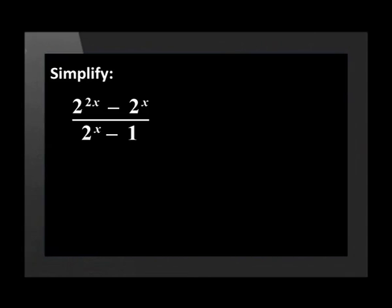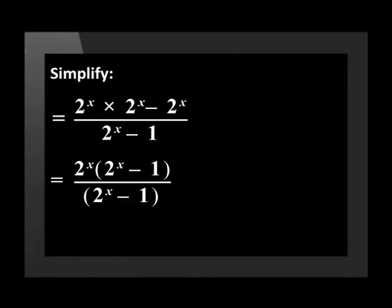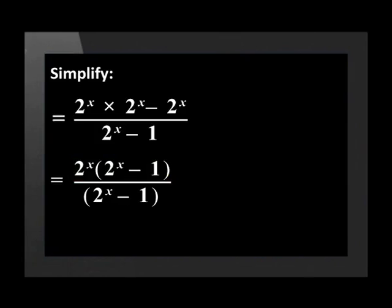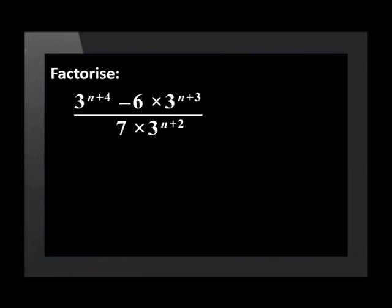Notice that the numerator has exactly the same terms as the previous example, so let's factorize it by taking out a highest common factor of 2 to the power of x. The numerator becomes 2^x multiplied by the bracket 2^x minus 1. The numerator and denominator now share a common factor of 2^x minus 1. Putting brackets around the denominator and cancelling leaves us with 2 to the power of x.